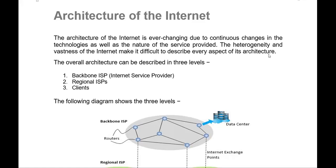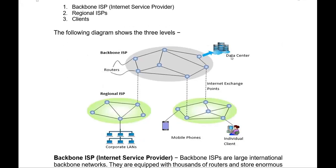Point number one: Backbone ISP, means Internet Service Provider. Point two: Regional ISP. Point three: the client. The backbone is our Internet Service Provider. Generally, we have a lot of routers, data centers, switches, hubs, gateways, and servers. All these devices are the backbone of our internet.